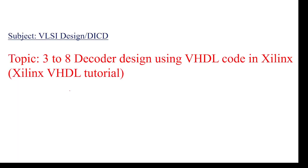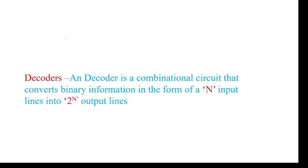I am going to explain about a 3-to-8 decoder using VHDL code. A decoder means it has n input lines to 2-power-n output lines. For example, if n equals 3, then we have 3 input lines and 2-power-3 equals 8 output lines. That is why it is called a 3-to-8 decoder.